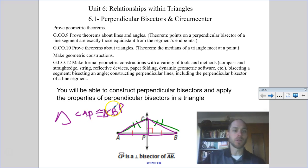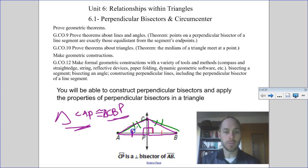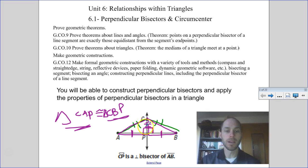Let's look a little bit more in depth as to why we can say that triangle CAP is congruent to triangle CBP. If it's a perpendicular bisector, we know this angle is 90 degrees, and this angle would be 90 degrees. And since it's a bisector, AP is congruent to BP. So you have an angle and a side congruent to each other. We know CP is in both triangles, so by the reflexive property they also share a side.